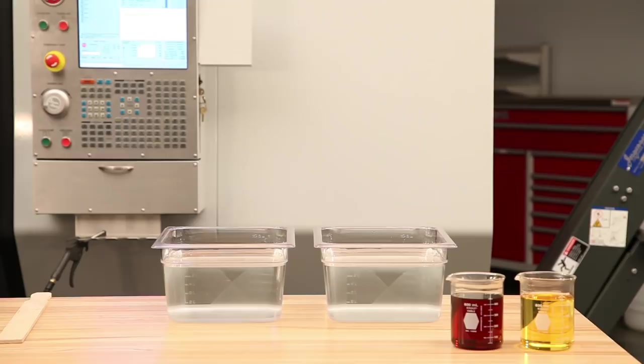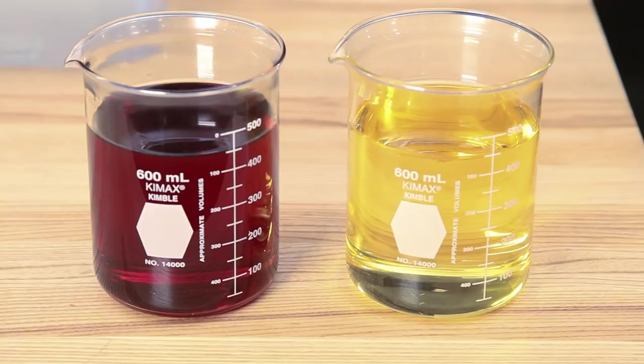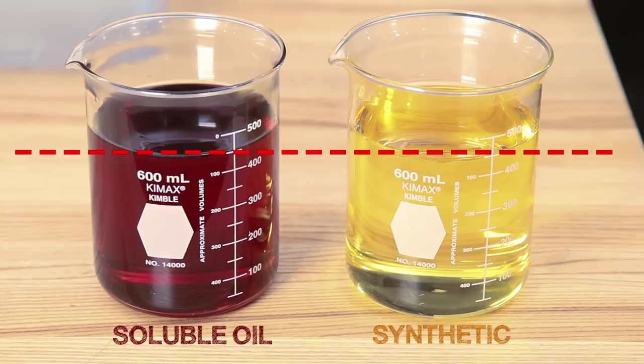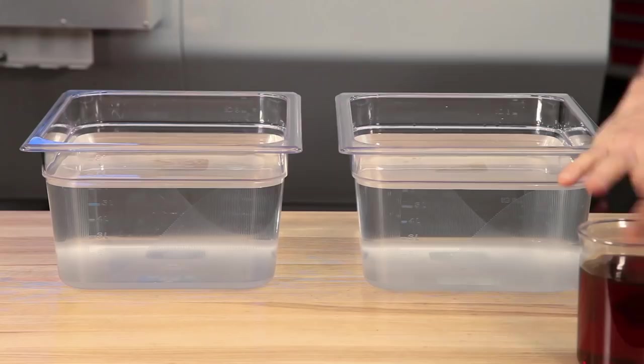One using a soluble oil, and the other a full synthetic. Both vials are holding the same amount of concentrate, and both of these pans are holding the same amount of water. We add the concentrate and mix thoroughly. Now, let's see what our refractometer readings come out to.